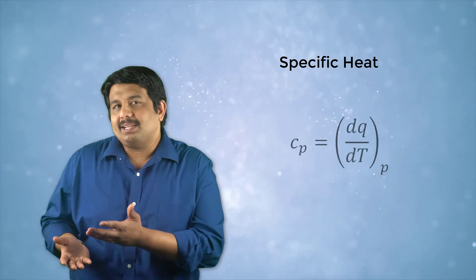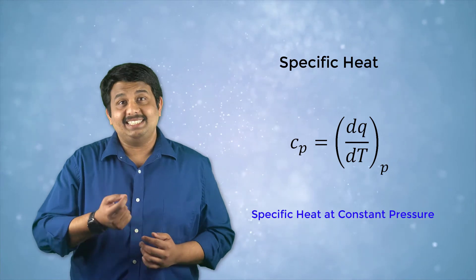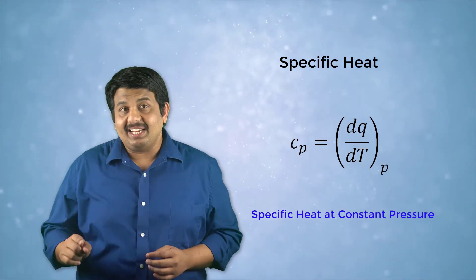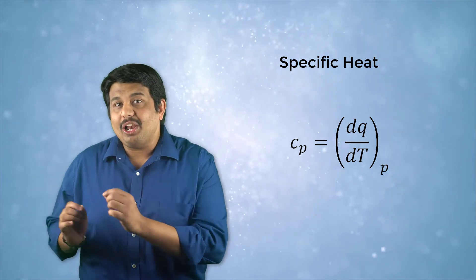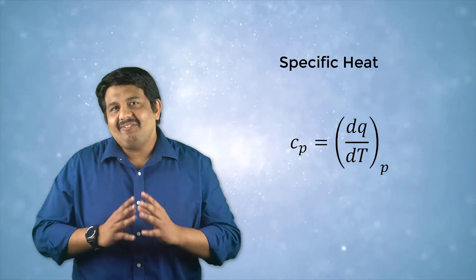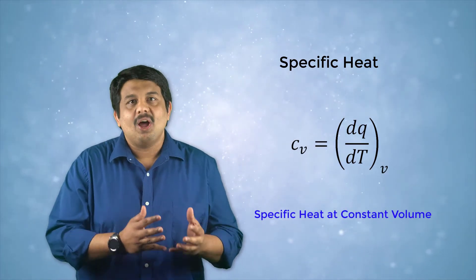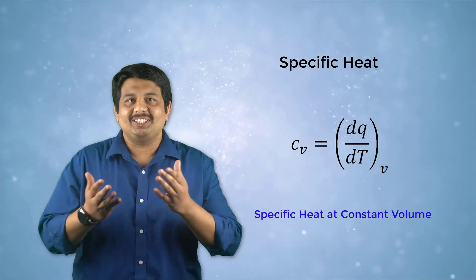The amount of heat needed to increase the system's temperature by 1 Kelvin is called its specific heat. If the system maintains a constant pressure during this heat addition process, then the specific heat is denoted by Cp and is called specific heat at constant pressure. On the other hand, if the heat addition is a constant volume process, then we refer to the specific heat as Cv or specific heat at constant volume.